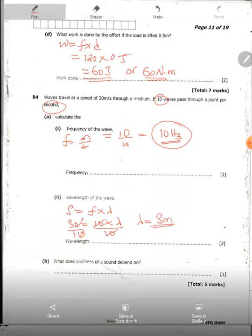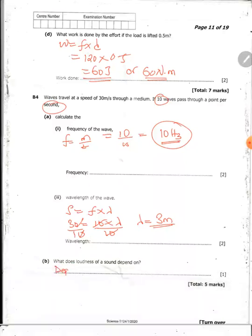What does the loudness of sound depend on? Loudness of sound actually depends on the amplitude of the wave. So it depends on the amplitude of the wave.